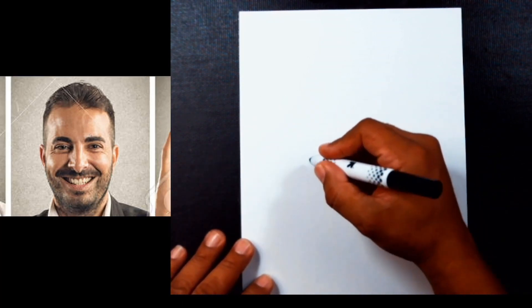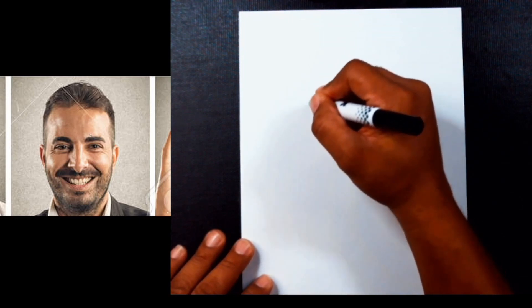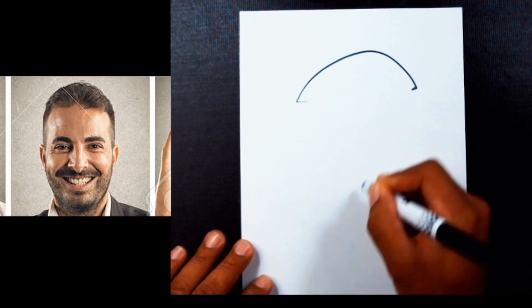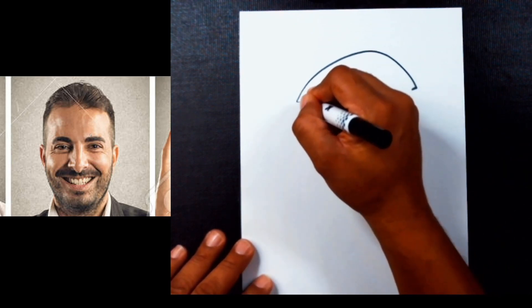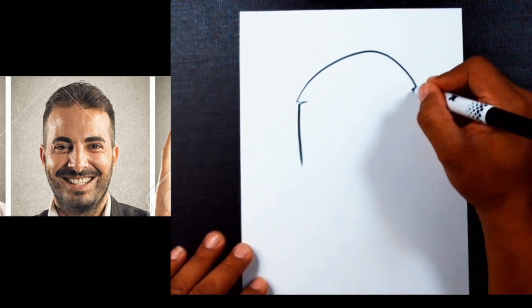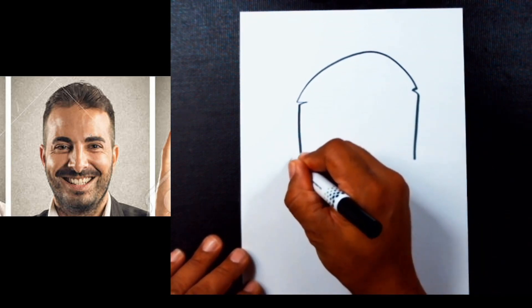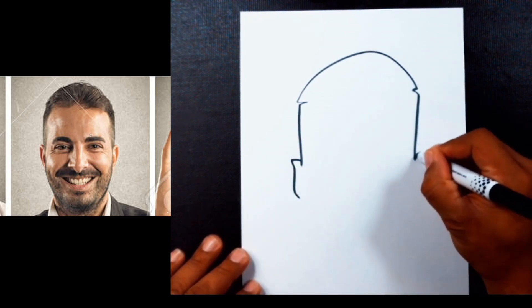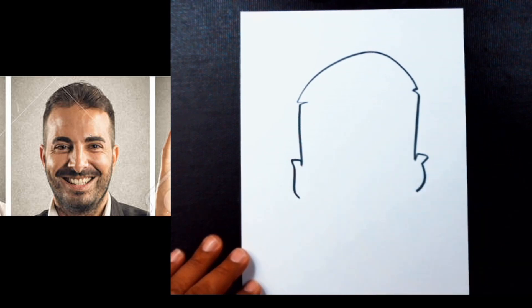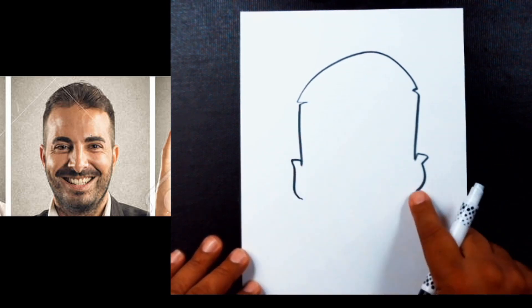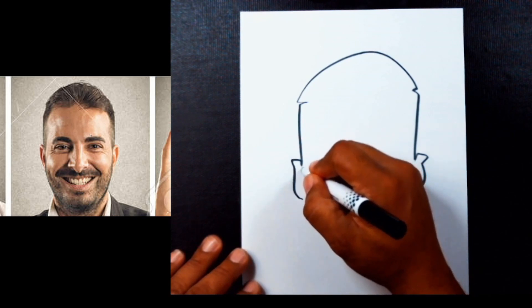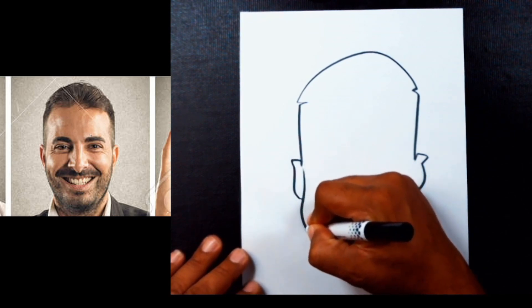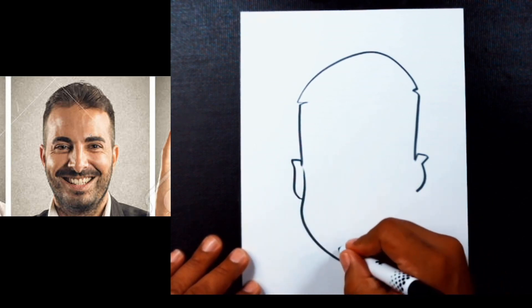On this one here we'll start again at the top of the head, put the little shape right here, then we'll come out, we'll come down, then we'll put our little ear shape here, put our ear shape here.